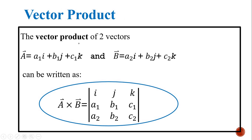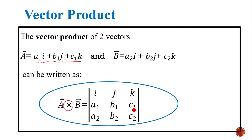Vector product. The vector product of two vectors, vector a equal to a1i plus b1j plus c1k and vector b equal to a2i plus b2j plus c2k, can be written as vector a cross vector b. We write it as a matrix with i, j, k in the first row, then vector A components a1, b1, c1 in the second row, and vector B components a2, b2, c2 in the third row.